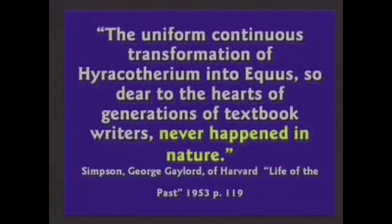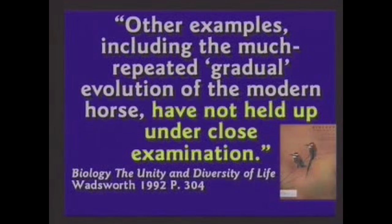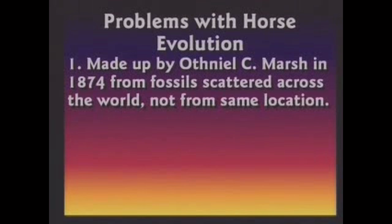This example of horse evolution has not held up under close examination. Othniel Marsh made up this whole idea in 1874. He wanted to provide evidence for Darwin's theory. He picked animals from all over the world and put them in an order he thought they would look good. It's imagination.